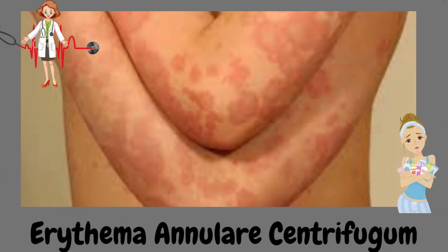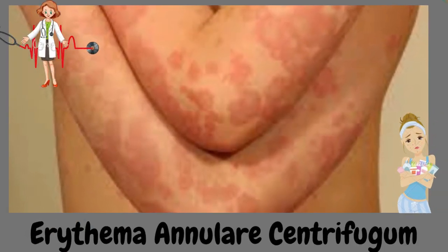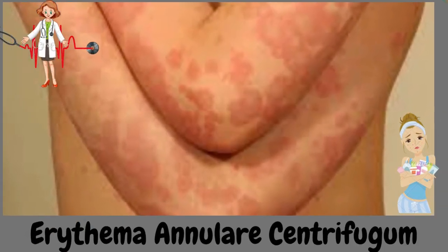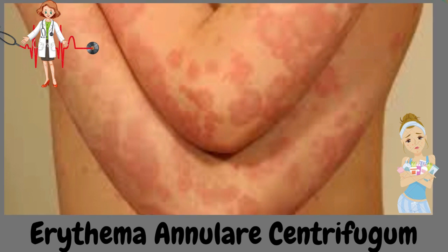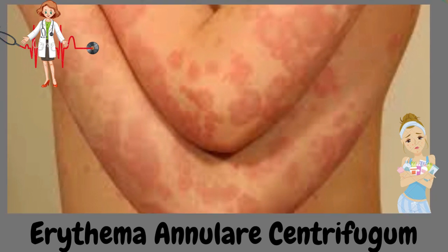Erythema annulare centrifugum (EAC) is one of the reactive erythemas, also called figurate or gyrate erythemas. Erythema gyratum rippon and erythema marginatum are also reactive erythemas.